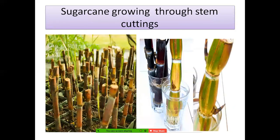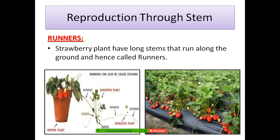Sugarcane is a stem, and if you look at it you will see two buds. When it is dipped in water, after a few days new plants start growing from these buds. There are also runners — stems that run along the ground. Examples include strawberries and Bermuda grass. They are called runners because their stems run along the ground and grow into new plants, so from one stem you can get many new plants.